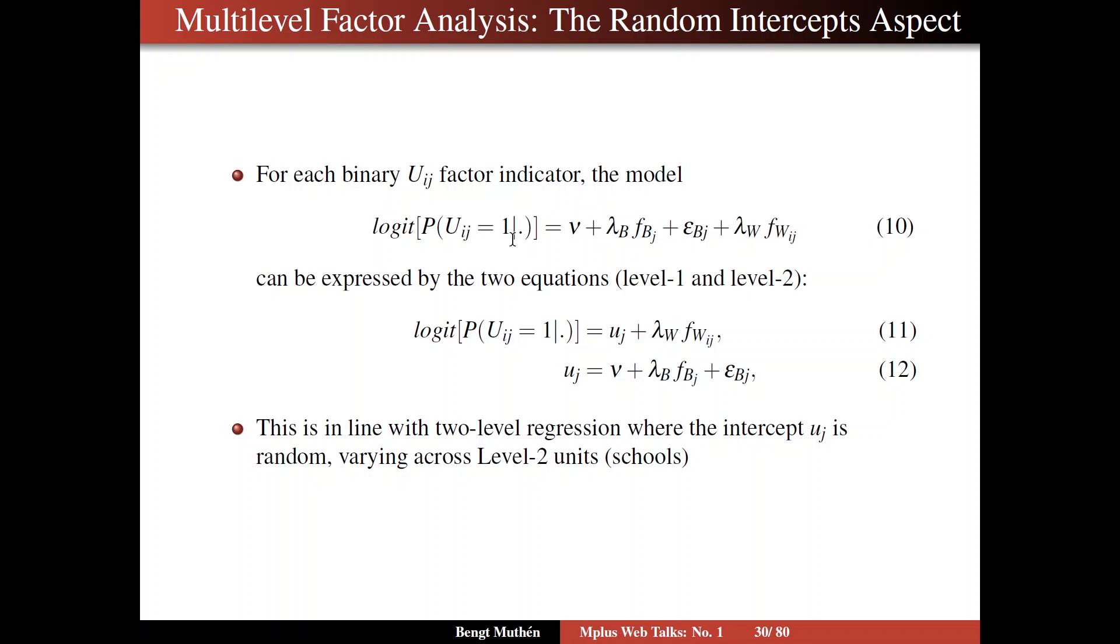Now, I condition then, I have a condition on dot here. It means that you condition on any random quantity on the right, by which I mean that I'm not talking about the marginal probability of u being one, but I'm talking about the conditional probability as a function of these quantities on the right. The marginal probability would integrate out all of these, sum over all of these random variables.